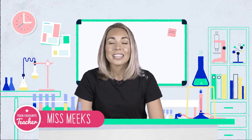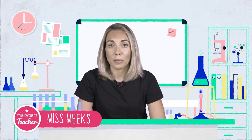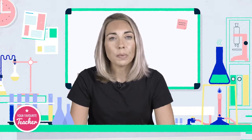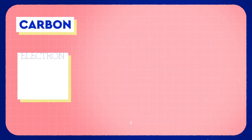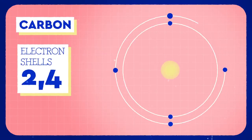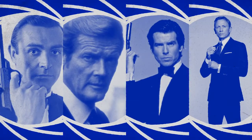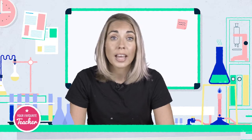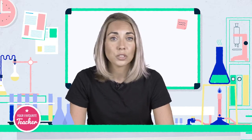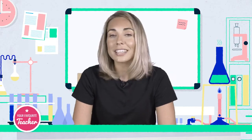Hello and welcome to your favourite teacher. Today we'll be looking at structure and bonding of carbon. Carbon is in group four and has four electrons in its outer shell. It forms four bonds for every atom it shares to make four shared pairs of electrons, giving it eight in its outer shell, making it complete.